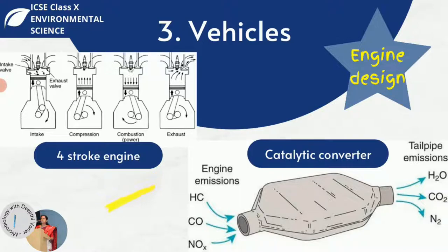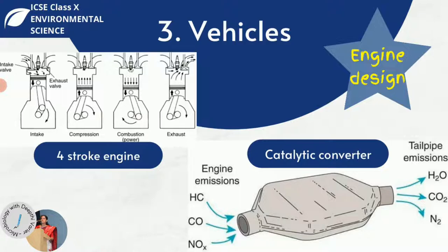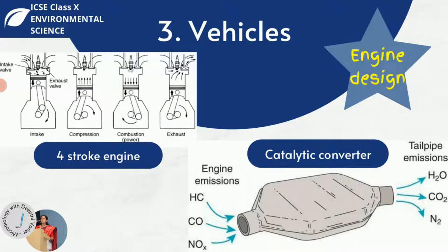We can also use a four-stroke engine, which is an internal combustion engine with four piston strokes. In a four-stroke engine, fuel is consumed once every four strokes, making it more fuel efficient than a two-stroke engine. There is also no need for oil or lubricant in a four-stroke engine. These are small changes that can ensure air pollution is reduced.